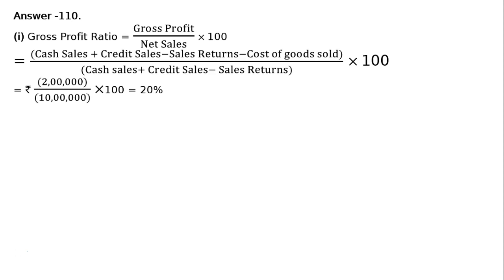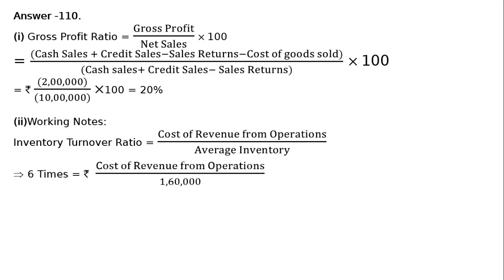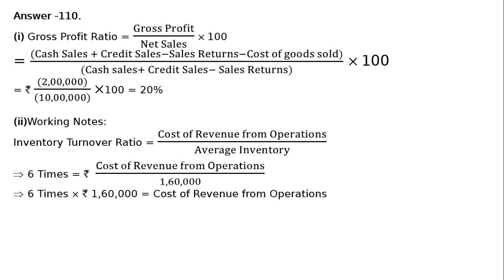The second problem: average inventory is Rs. 1,60,000, inventory turnover ratio is 6 times, and selling price is 25% above cost. We need to calculate the gross profit ratio. Working note: inventory turnover ratio equals cost of revenue from operations upon average inventory. So 6 times equals cost of revenue from operations upon Rs. 1,60,000. Cross multiplying, cost of revenue from operations equals Rs. 9,60,000.